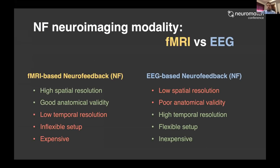With fMRI-based neurofeedback, we have a very high spatial resolution, which gives us good anatomical validity, but we have a low temporal resolution, and most of all, an inflexible setup that is very expensive — which is a significant concern for intervention and rehabilitation. On the EEG side, we have a very low spatial resolution and poor anatomical validity, but in contrast, a high temporal resolution, a flexible and inexpensive setup, and we can even do it remotely at the patient's homes.